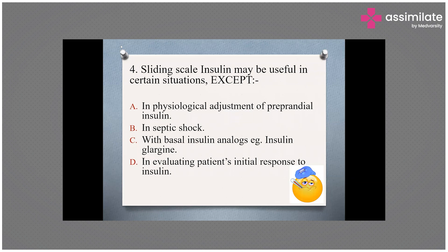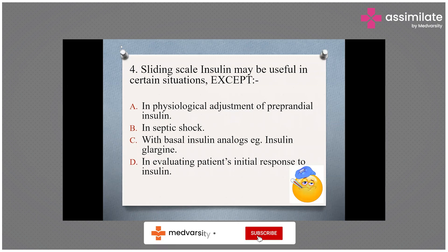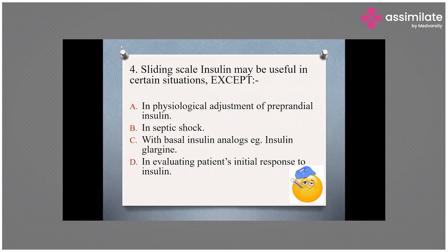If sliding scale insulin is given alone it has limited long-term benefit, but when given along with a basal insulin analogue or any short or rapid acting insulin, it provides corrected glucose supply on a longer-term basis. Sliding scale is typically not used in critically ill patients. In critically ill patients, continuous insulin infusion of regular insulin is preferred, with a rapid-acting insulin added for more efficacy.